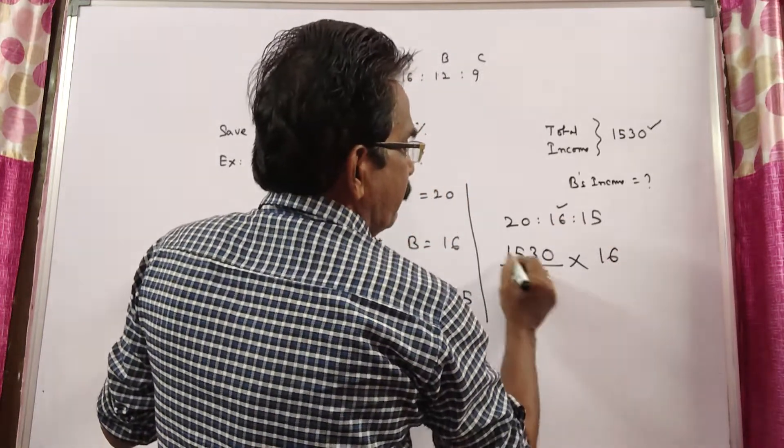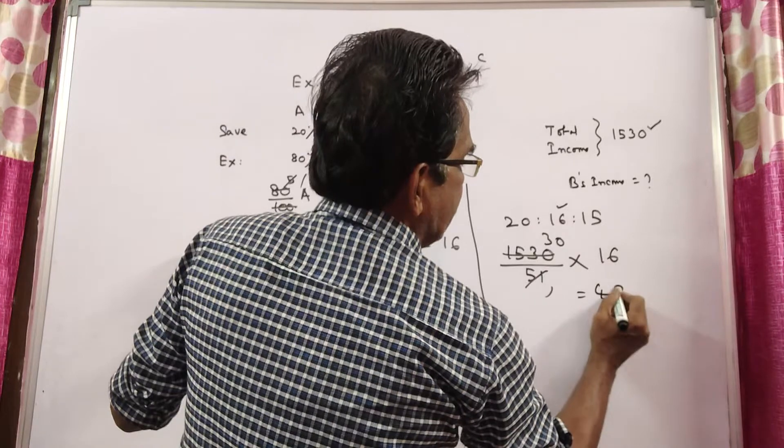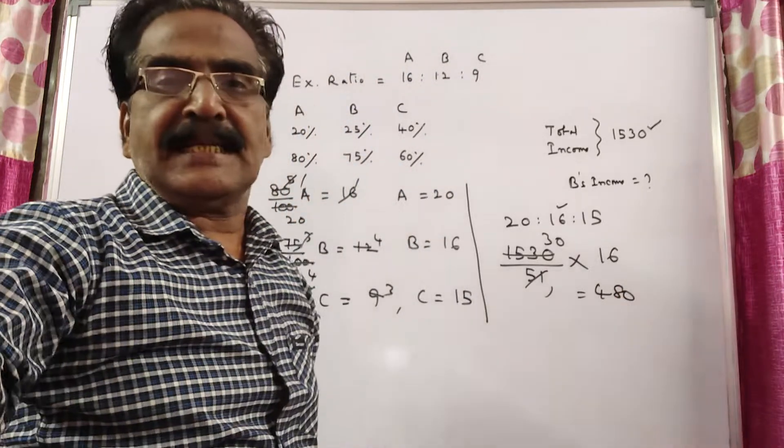Simplifying 51 by 3, we get 480. Therefore, B's income is 480.